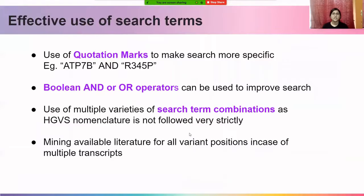These resources can be mined effectively with the use of good search terms. Using quotation marks in the search box will improve the quality of search hits and make them very specific. This can be enhanced further by using Boolean operators such as AND and OR. One also needs to keep in mind that HGVS nomenclature is not followed very strictly, and using these search combinations is required so that we can mine the literature correctly.